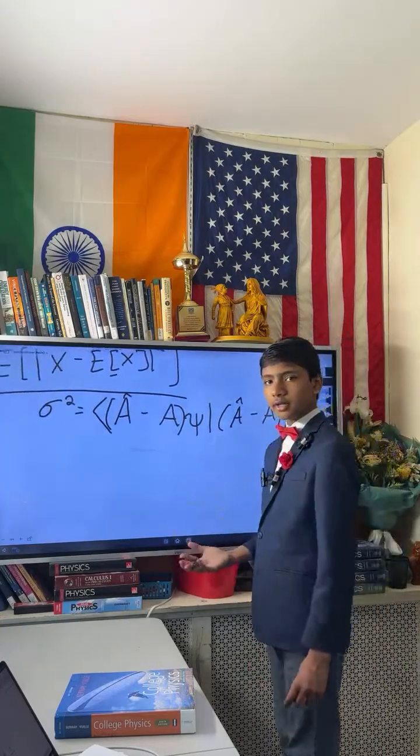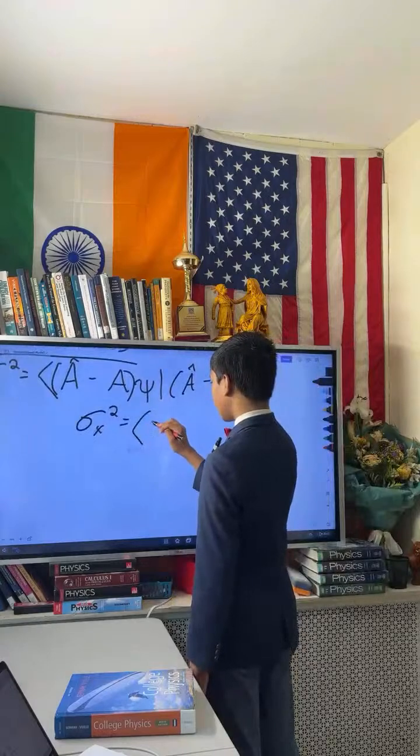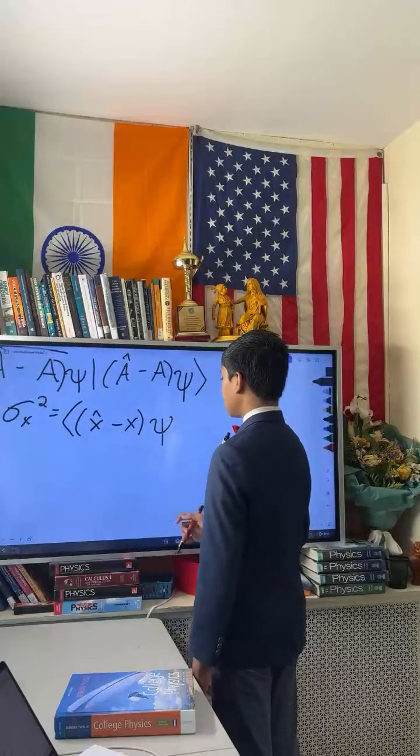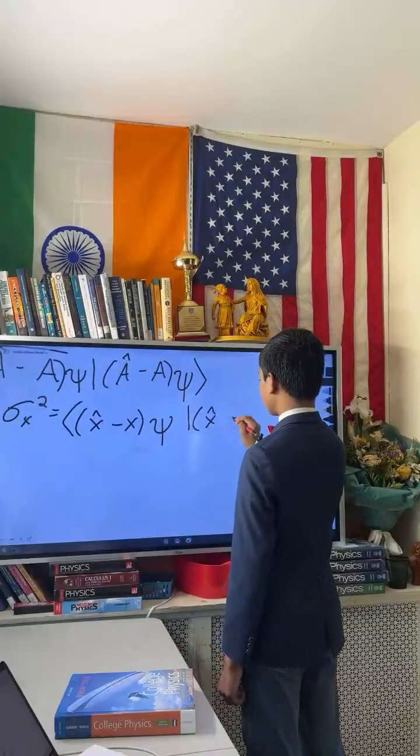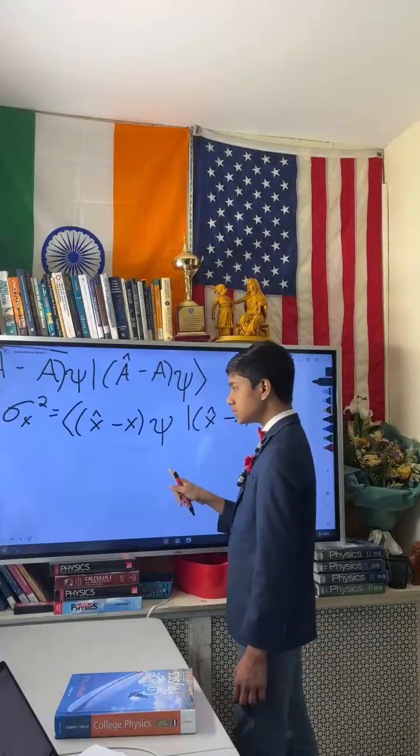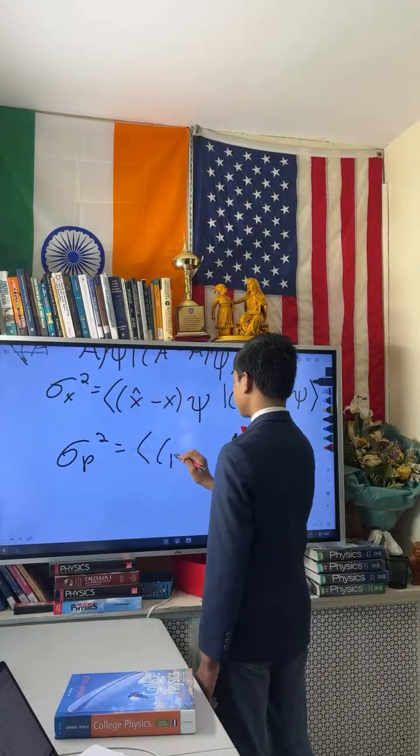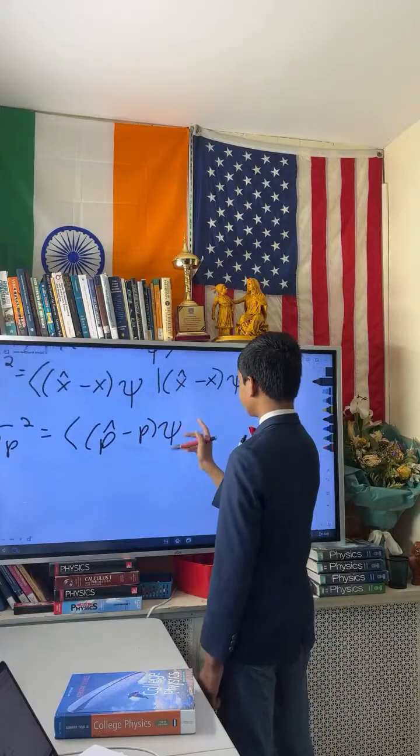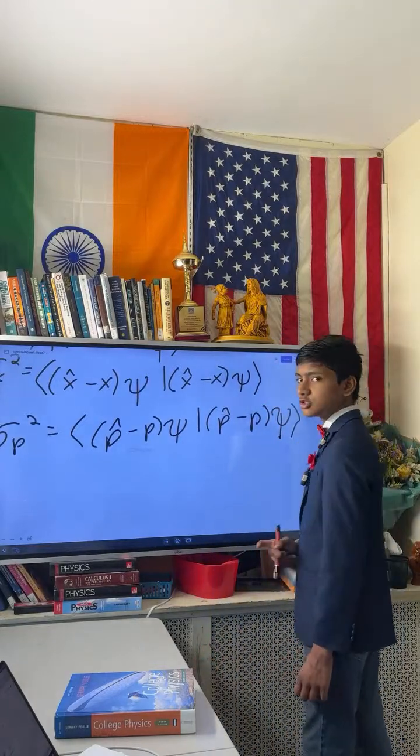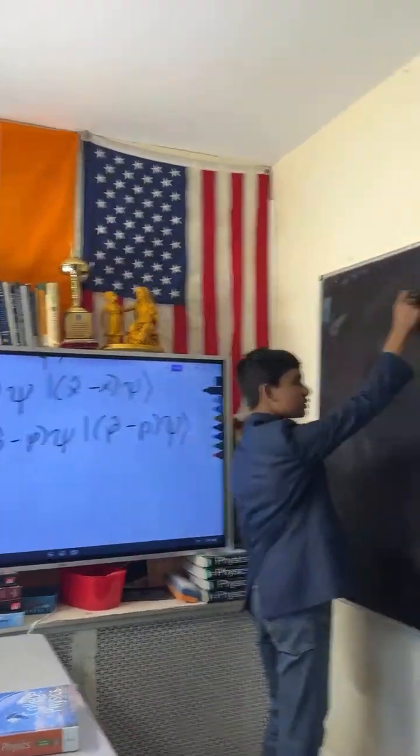Now, if we're talking about position in specific, this is going to be the position operator x hat, minus position x, multiplied by psi, and the product of it with itself. And for momentum, similarly, you're going to have the momentum operator p hat over here. And this is the perfect time to use the Cauchy-Schwarz inequality, which tells us that. Give me a few seconds for making transition.